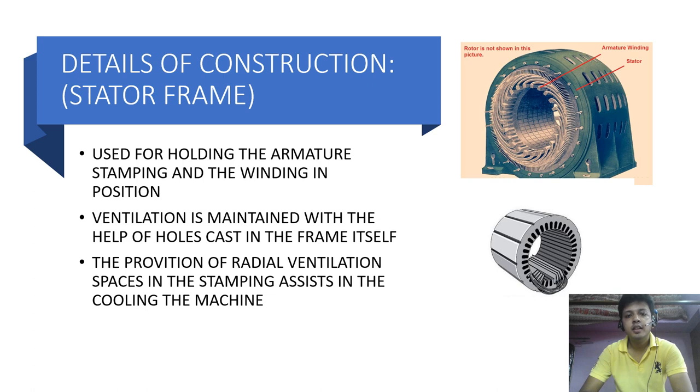In DC machine the outer frame or the yoke serve to carry the magnetic flux, but in alternator it is not meant for that purpose. Here it is used for holding the armature stamping and winding in position. Low speed, large diameter alternator have frames which, because of ease of manufacture, are cast in section. Ventilation is maintained with the help of hole cast in the frame itself. The provision of radial ventilating space in the stamping assist in cooling the machine. But these days, instead of using casting, frames are generally fabricated with mild steel plate welded together in such a way as to form a frame having a box type section.